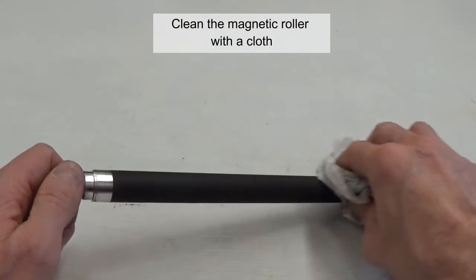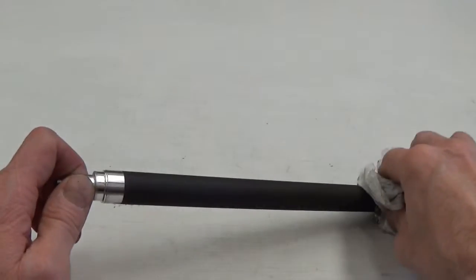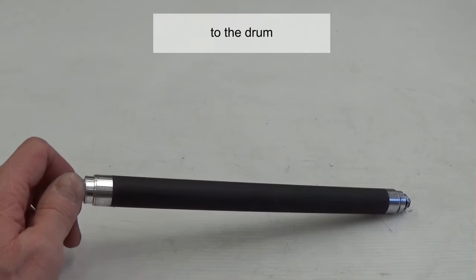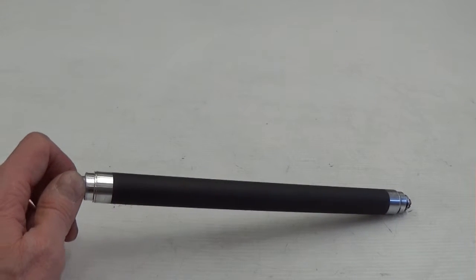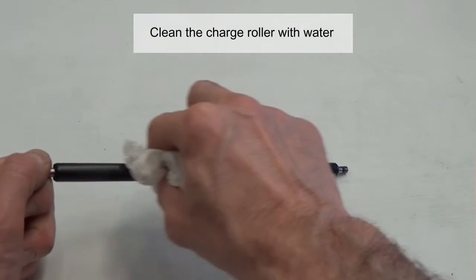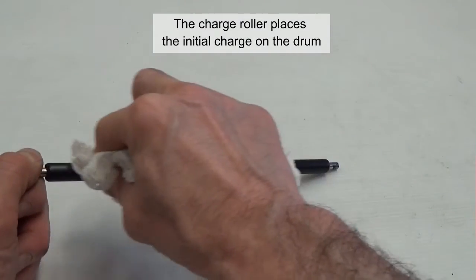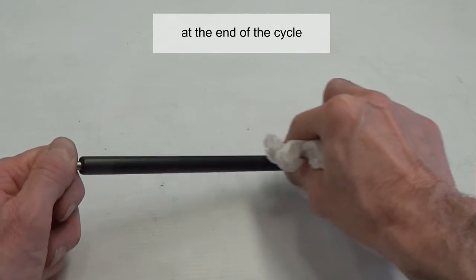Clean the magnetic roller with a cloth. It carries the toner from the supply chamber to the drum. Clean the charge roller with water. The charge roller places the initial charge on the drum at the end of the cycle.